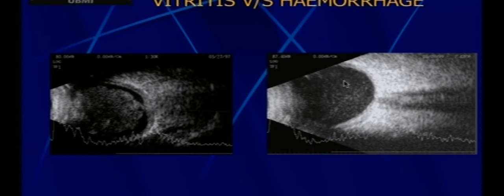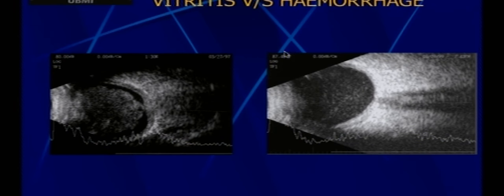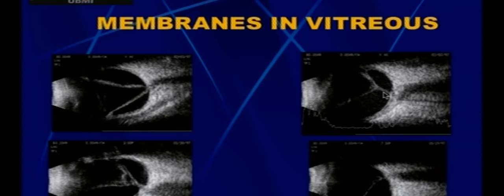A small amount of early hemorrhage can only be picked up by scanning the vitreous at high gain intensity. Look at the brightness difference between gain settings of 80 versus 87 — the minimal hemorrhage becomes apparent only at high gain. Now, regarding membranes within the vitreous: the key differentiation is between retinal detachment (RD) and posterior vitreous detachment (PVD). A uniform thick membrane attached to the optic disc with no after-movements is an RD. An irregular thin membrane with after-movements is a PVD. On A-scan, RD has higher reflectivity than PVD.